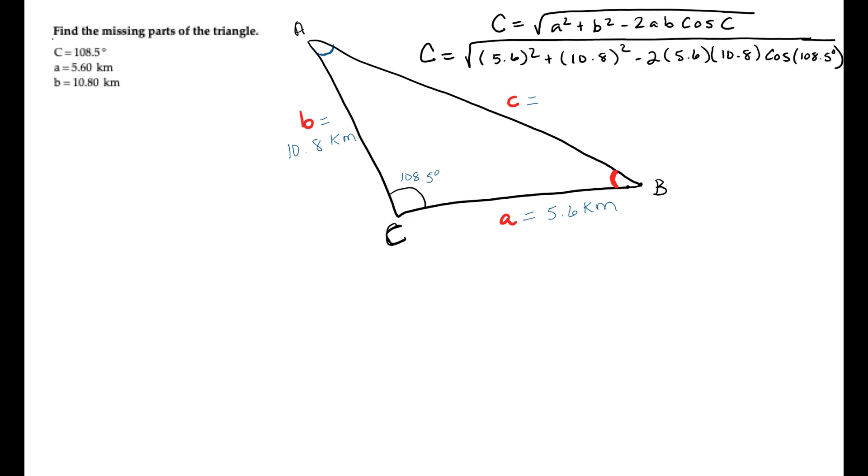Something looks like that. And you plug that in to your calculator, and you're going to get the fact that C equals 13.7 kilometers. So we've finished solving the side lengths.